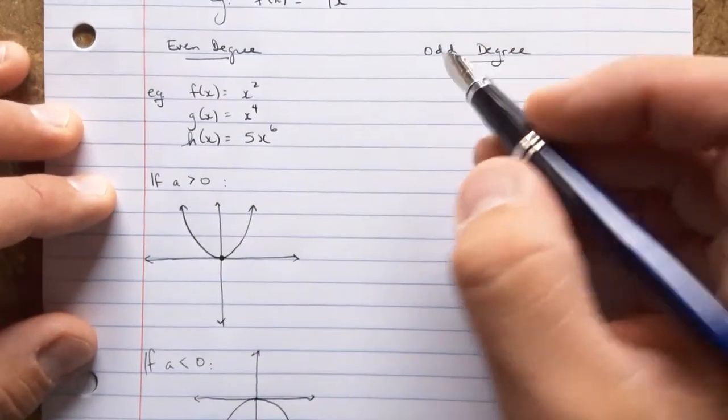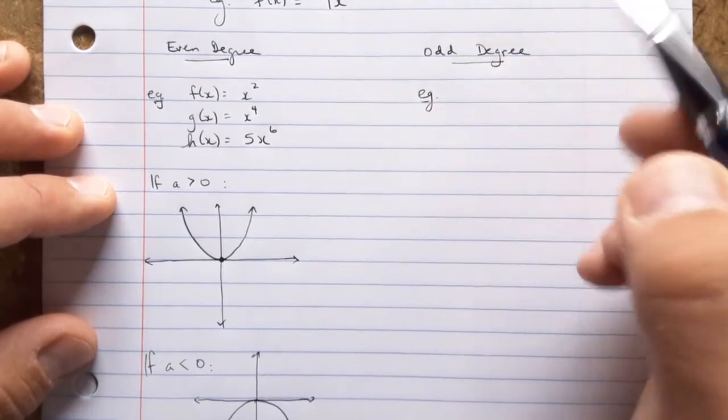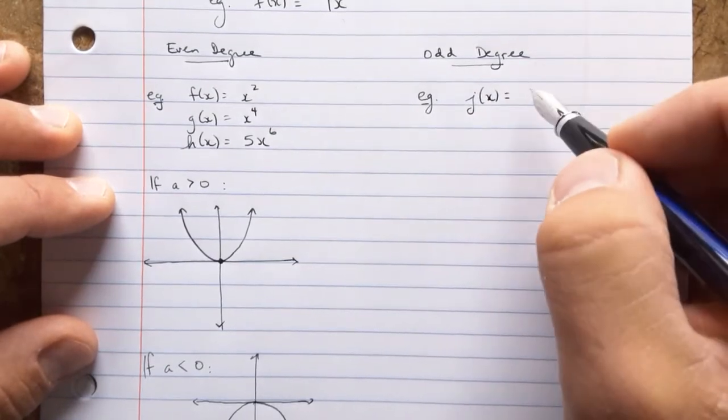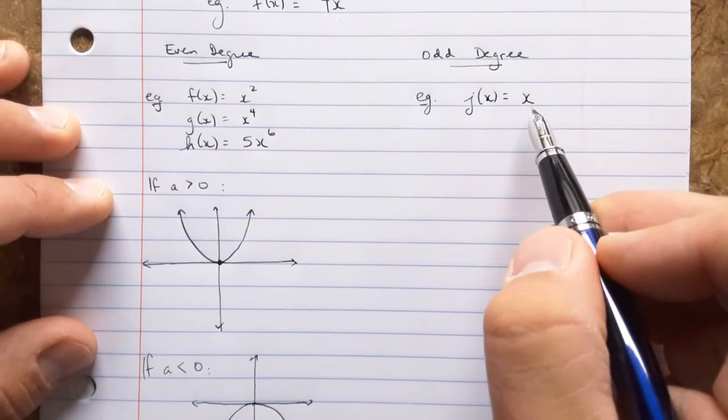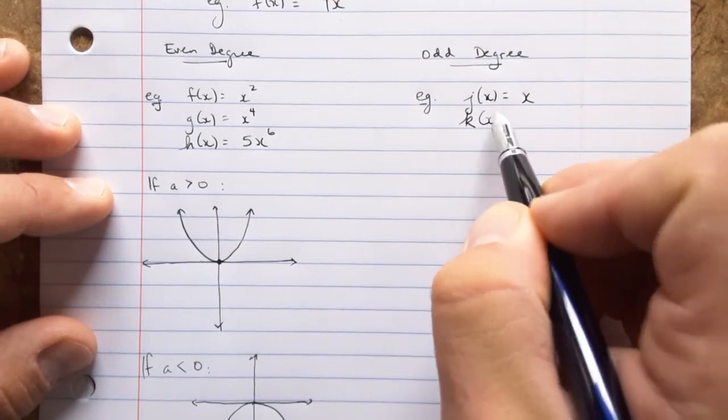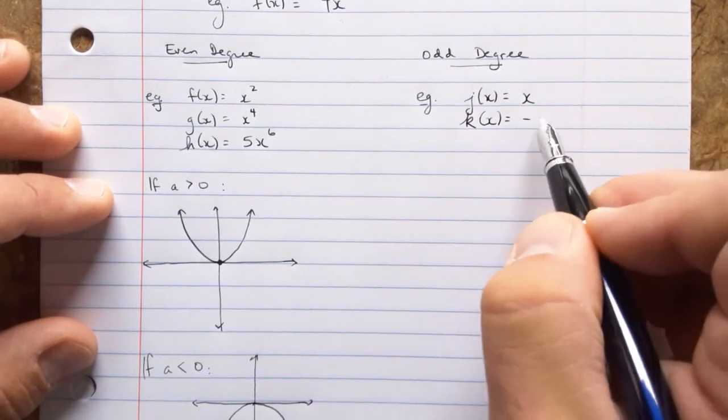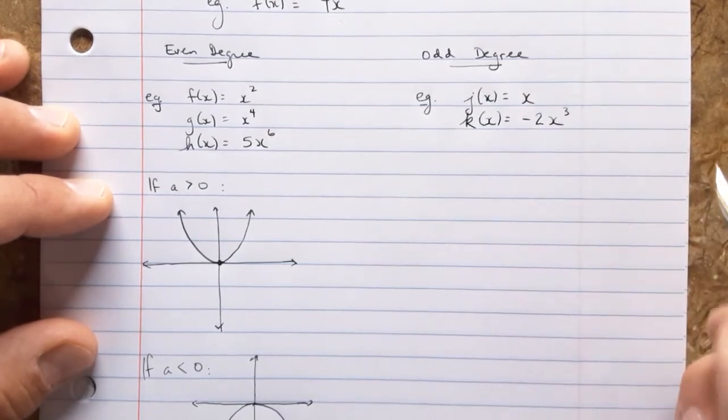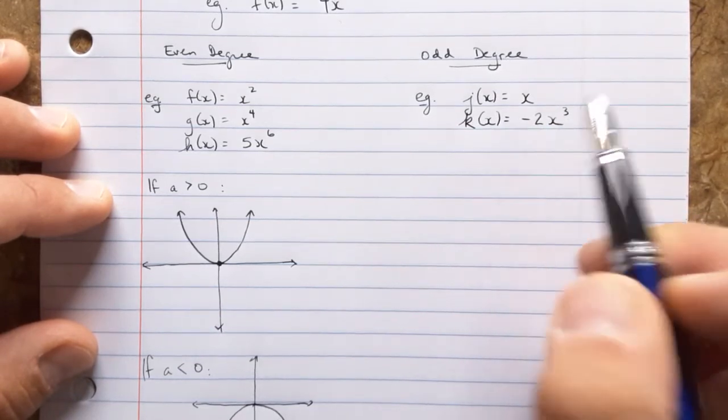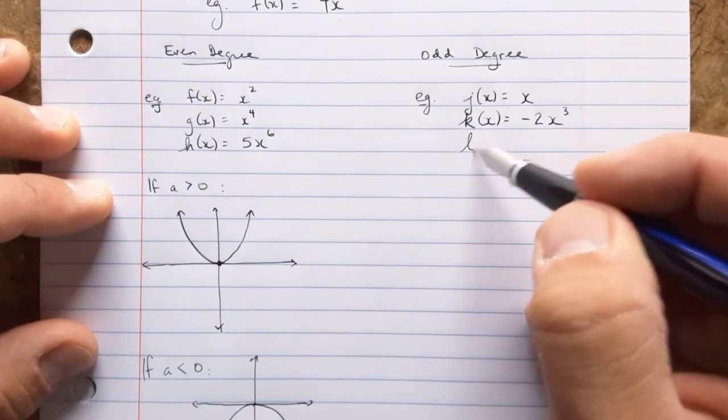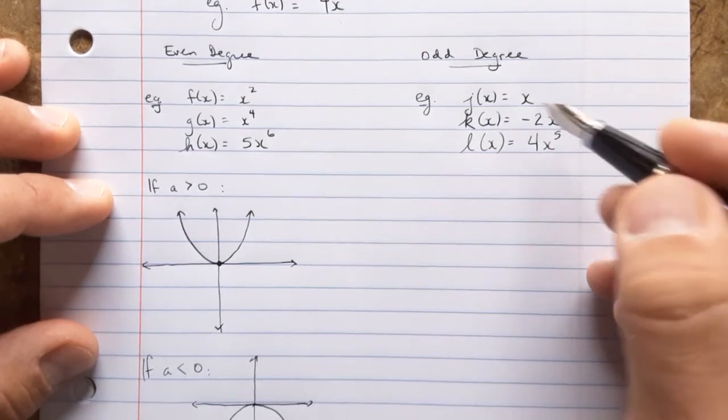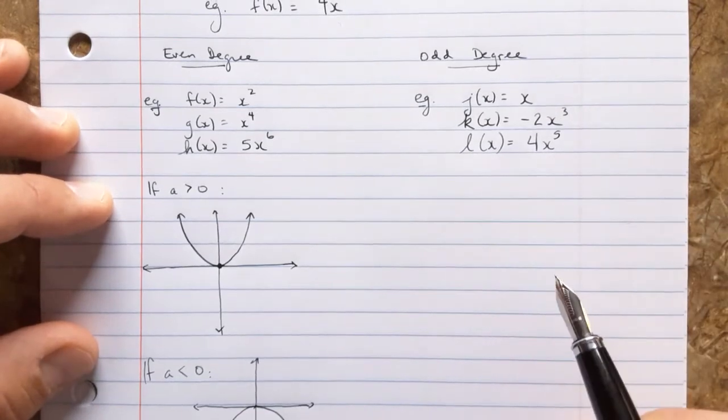Let's take a look at the odd degree functions then. First, let's write a few examples. Maybe I'll use some different letters. How about j of x? I don't like to use i. How about just x equals x? So that's a linear function, kind of up to the right, down to the left. How about negative 2x cubed? Cubed, that's a degree 3. That's an odd degree. It doesn't matter that the number out front is even. It doesn't matter at all. And that one's reflected. And let's do l. How about 4x to the fifth? And as long as the exponent is an odd number, and it's just a single term, that's what we have, a power function with odd degree.